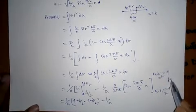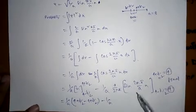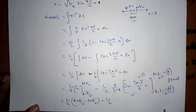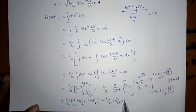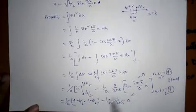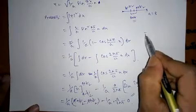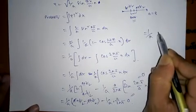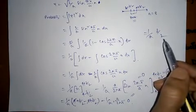Therefore both the limits are the same, therefore this term goes to zero. So what we have left: these fours cancel out, 1 by a, a into delta by 2.